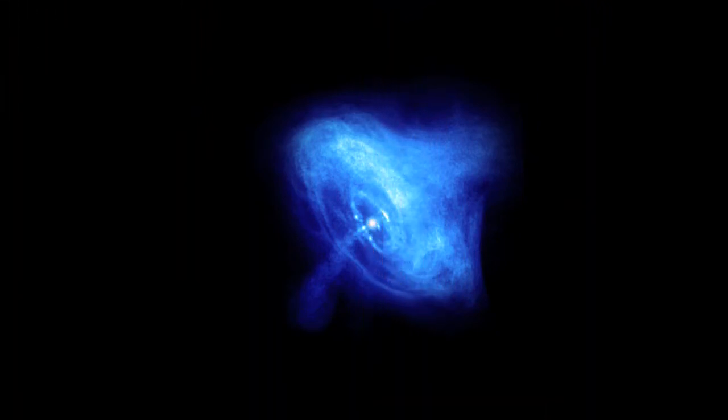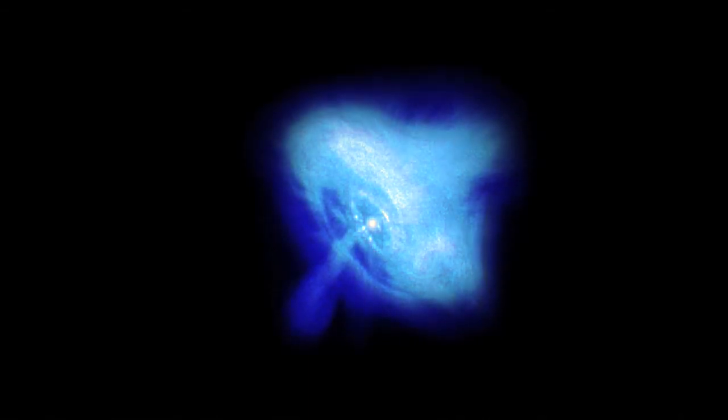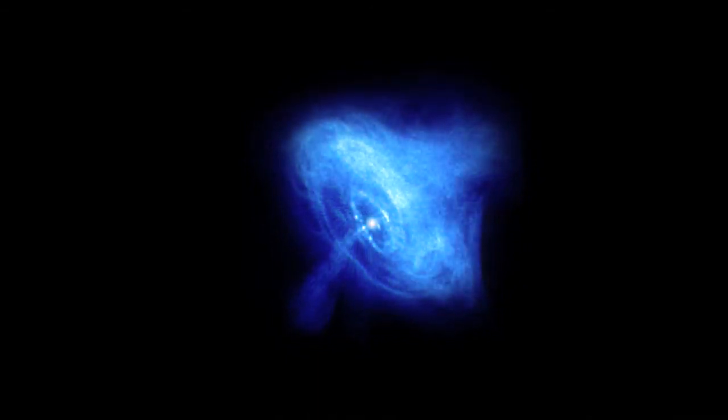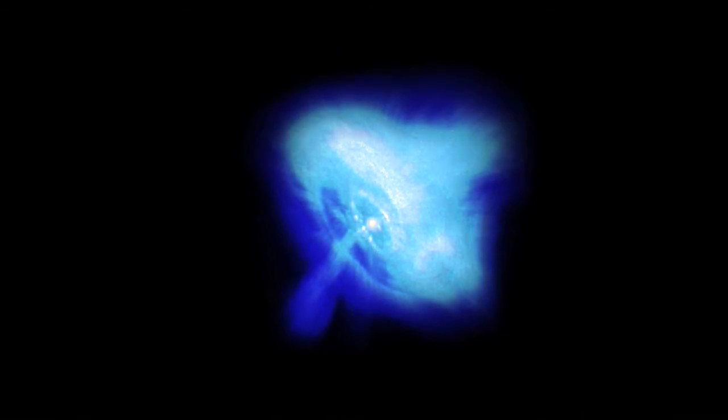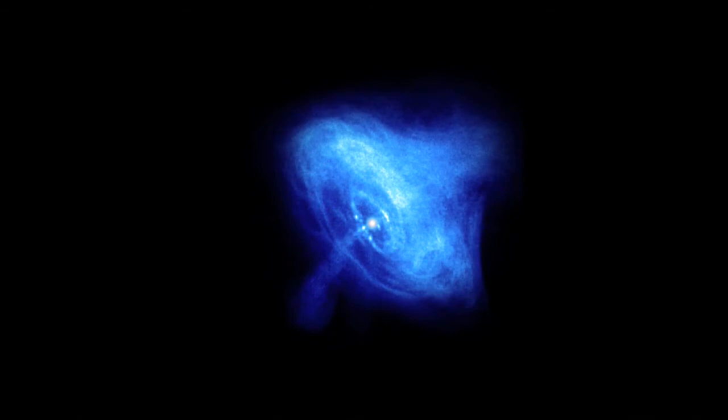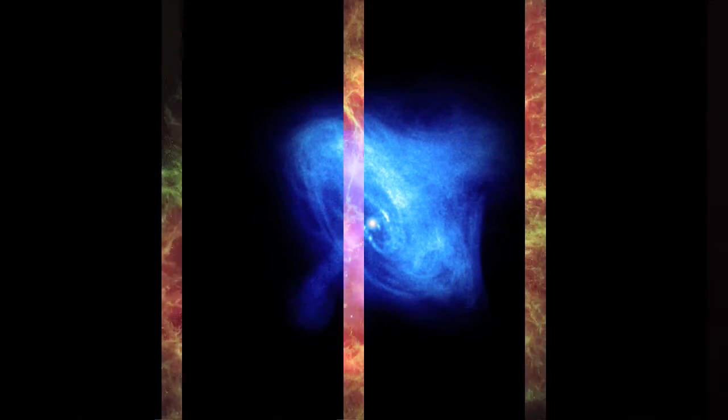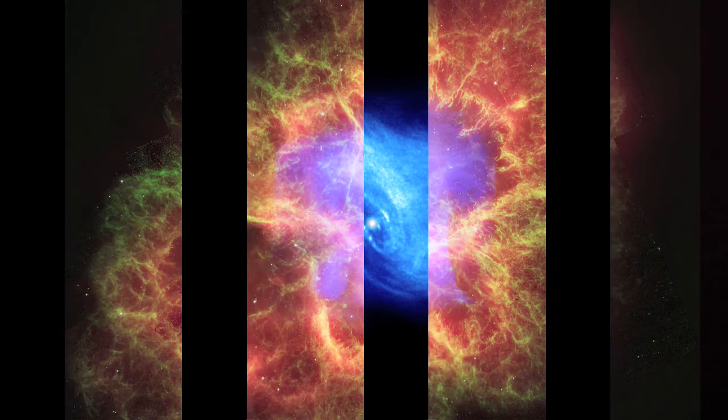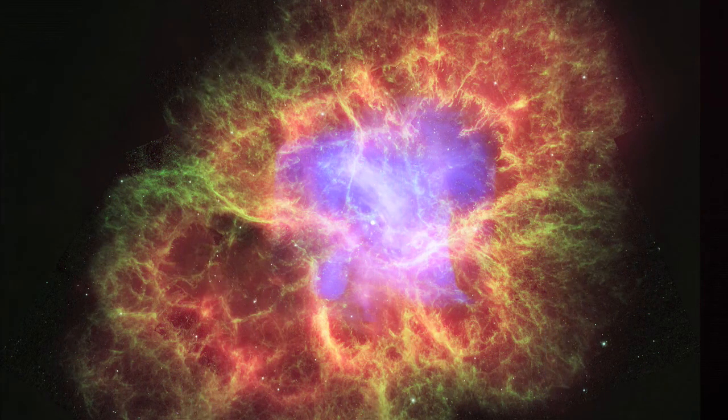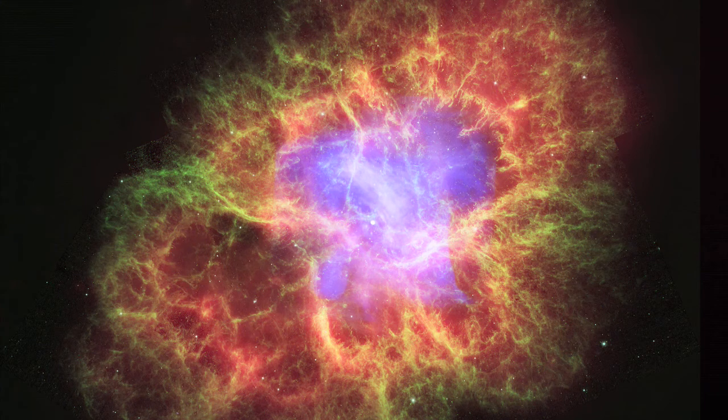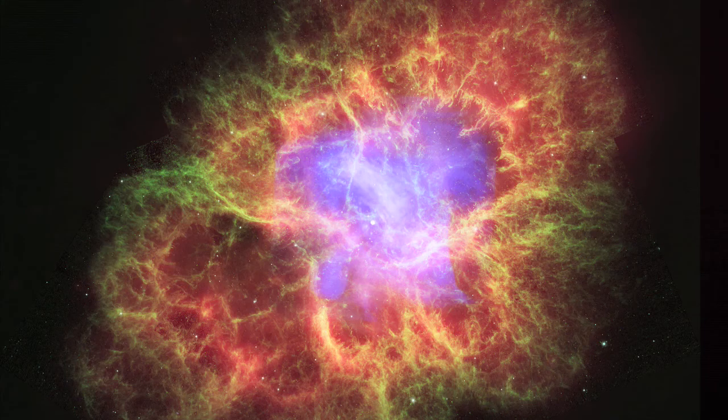At the heart of the Crab Nebula, we find the leftovers of the original star, a rapidly spinning neutron star. This pulsar has a mass equivalent to squeezing the sun into a ball just 20 kilometers across. It is rapidly spinning and spewing out pulses of high energy radiation 30 times a second. Detecting high energy X-rays that are emitted from the fast moving particles in the center of the Crab Nebula allows astronomers to probe deeper into this exotic object.